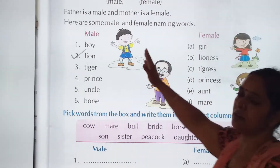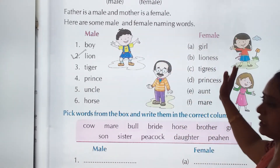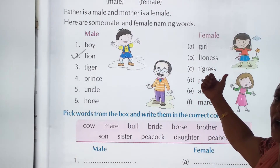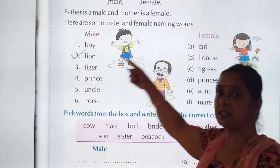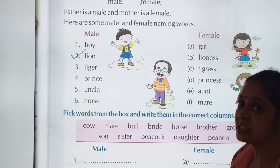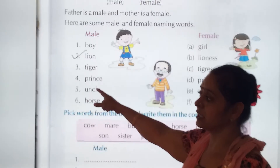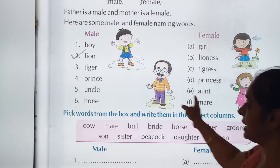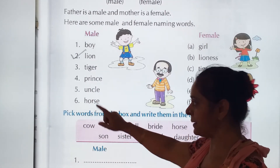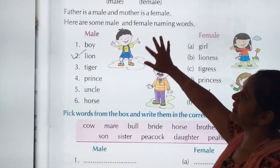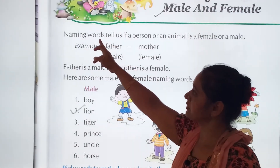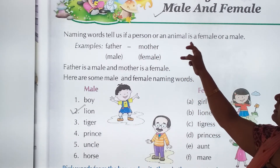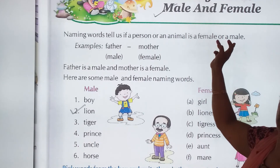I have explained what are the male and what are the female words. For boy, it's a male — what will be the female of a boy? Girl. Tiger — tigress. What will be the female of prince? Princess. Uncle — aunt. Horse is a male. I repeat the definition: naming words tell us if a person or an animal is a female or a male.